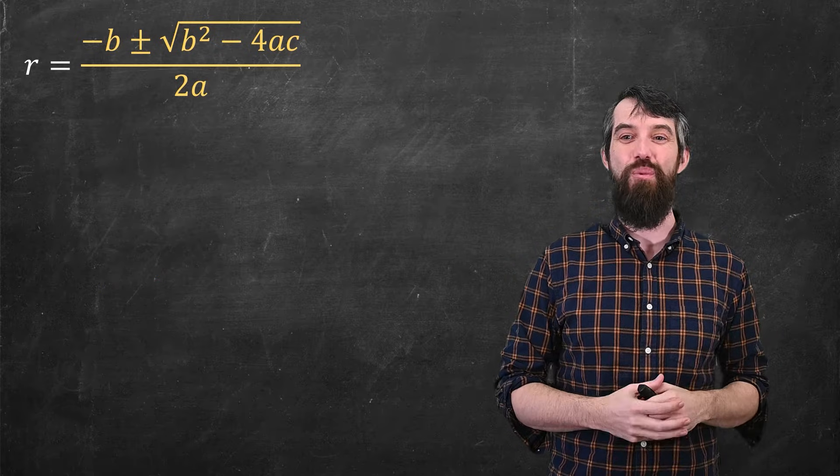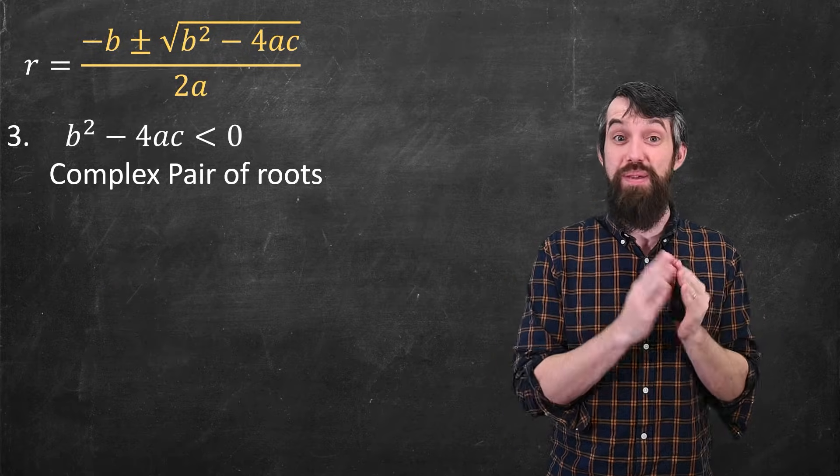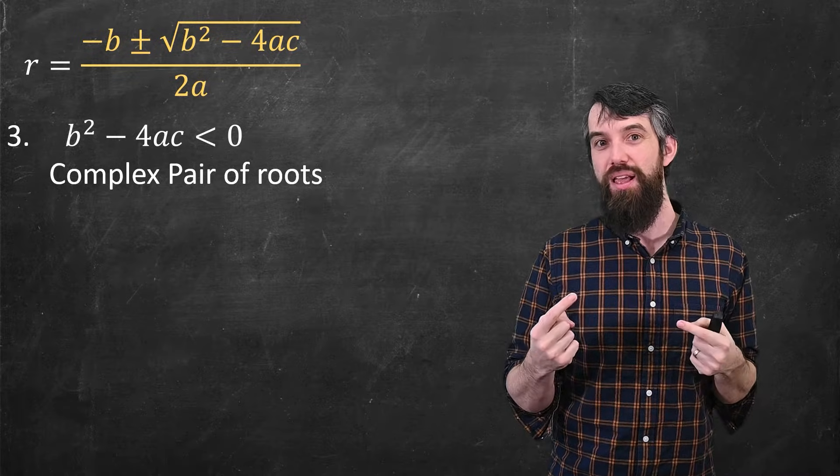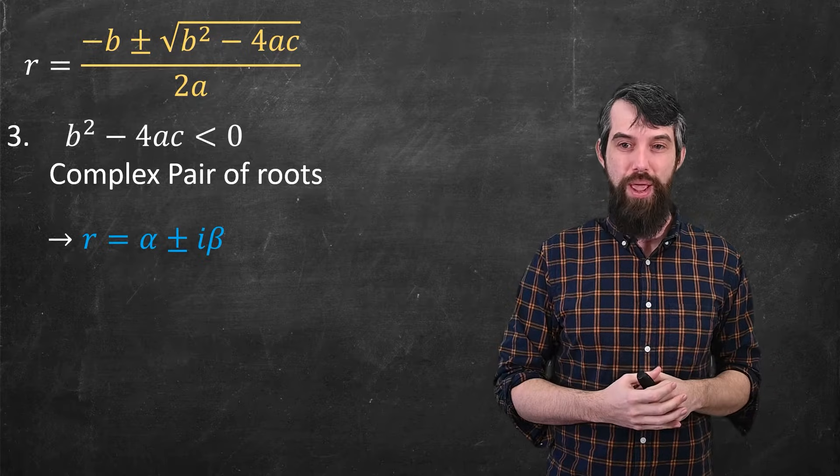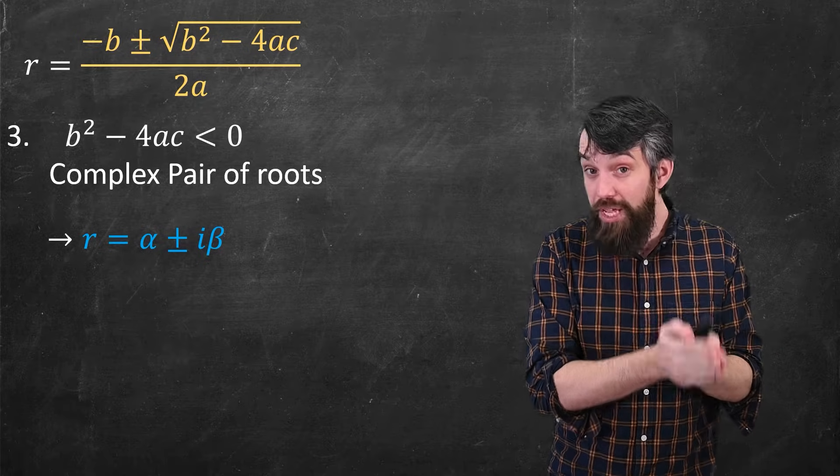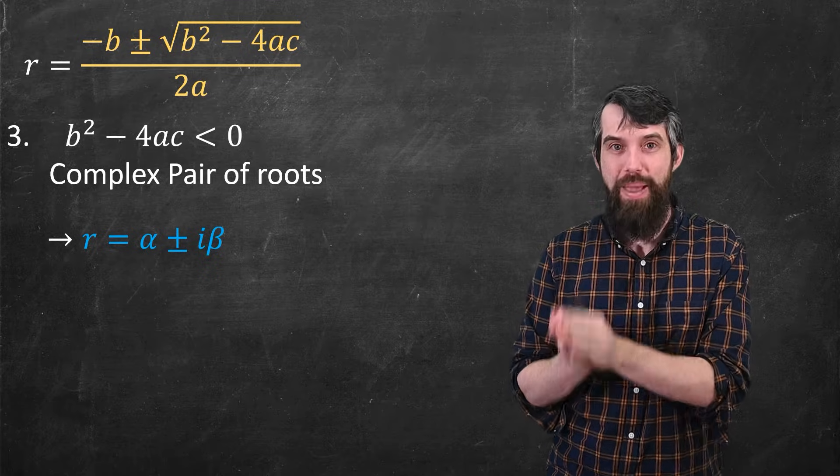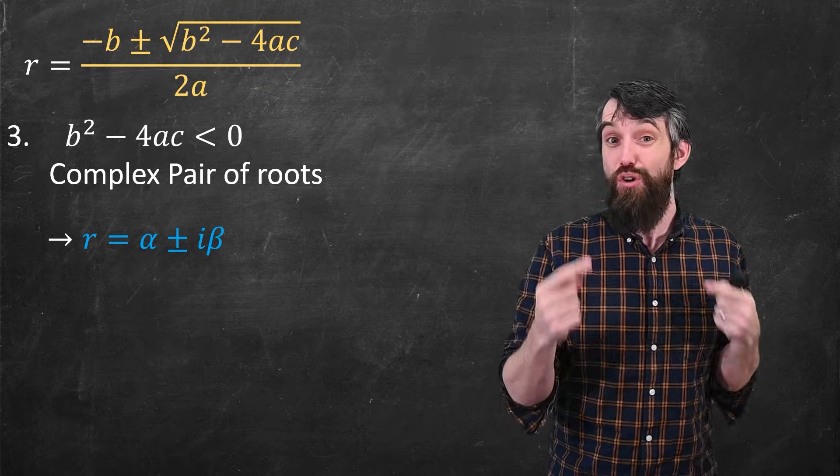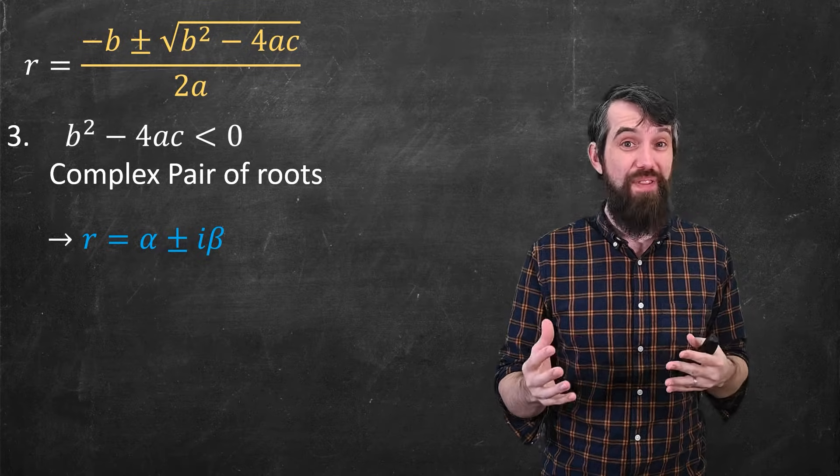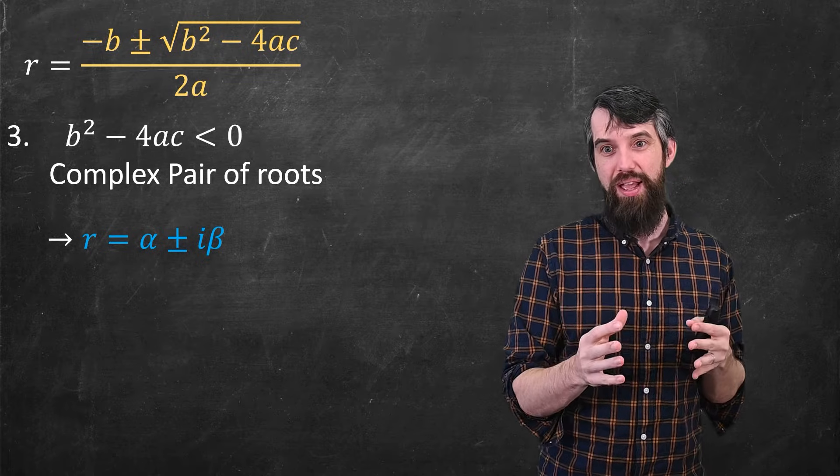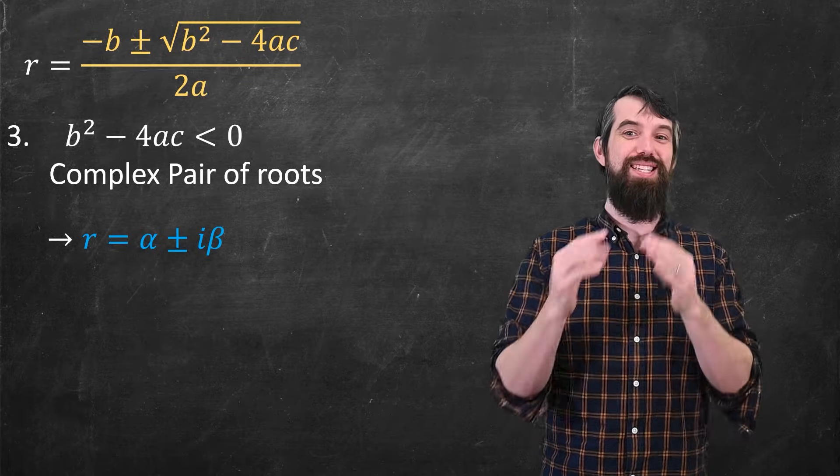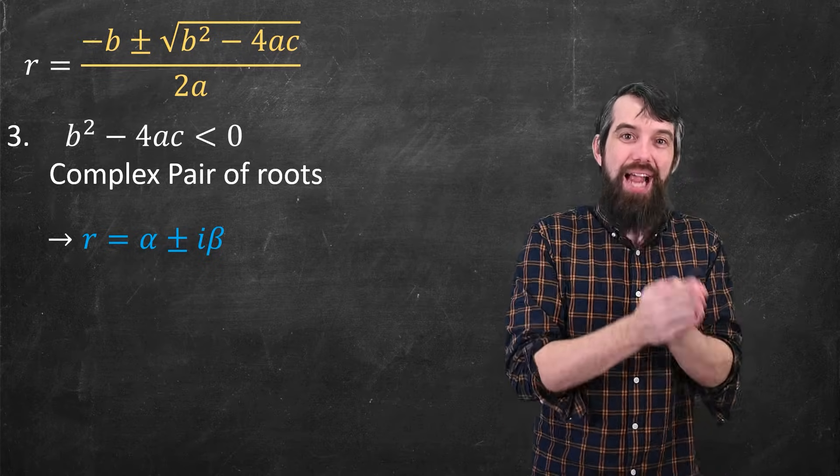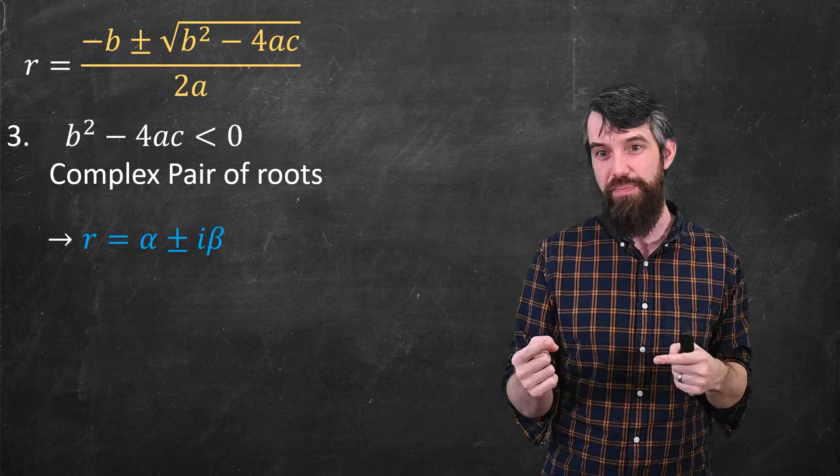Case three, this is the fun one. We're going to talk about the complex pair. When b squared minus 4ac is negative, and you have square root of a negative value. In general, the complex number, I'll write it this way: the root is alpha, that's the real part, plus or minus i times beta, that's the imaginary part. My alpha and beta are both real numbers. The form of the quadratic formula gives that real part, minus b divided by 2a, that's the real part. And then it also has this complex part, the square root of b squared minus 4ac divided by 2a. That'll be i times a number, and it's a plus or minus.